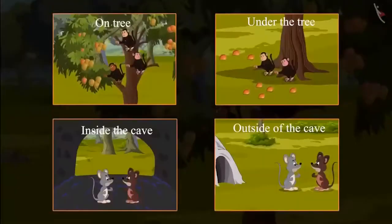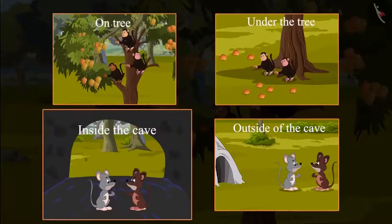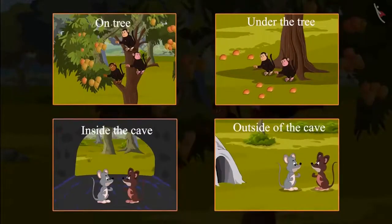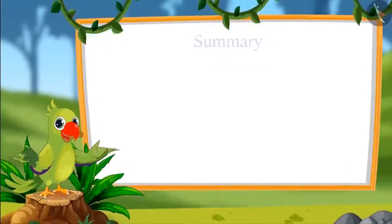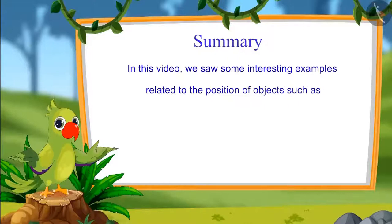So children, we saw that few things were on the tree and few were under the tree, few were inside and few were outside. These are called positions of objects. In this video, we saw some interesting examples related to the position of objects such as on, under, inside, and outside.